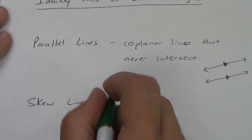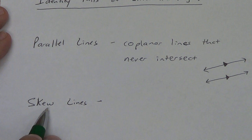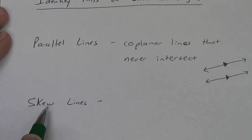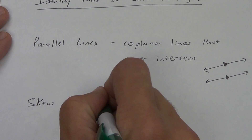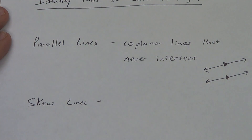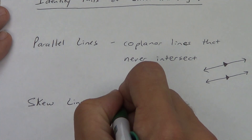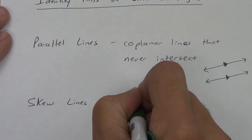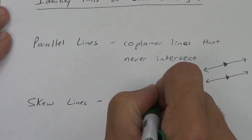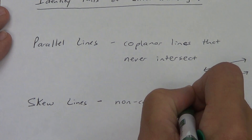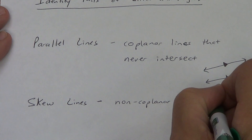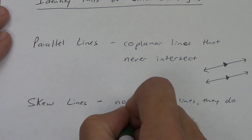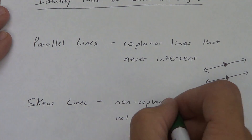Skew lines — this is probably a new term for you. Skew, S-K-E-W. Skew lines are also lines that do not intersect, but the reason they don't intersect is they are non-coplanar lines. They do not intersect. Now, this is a little bit hard to draw.